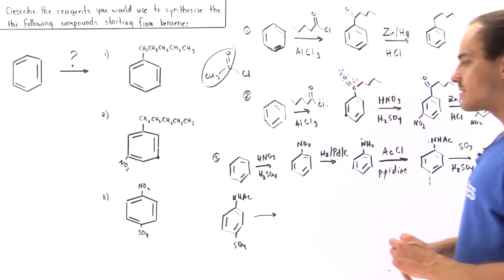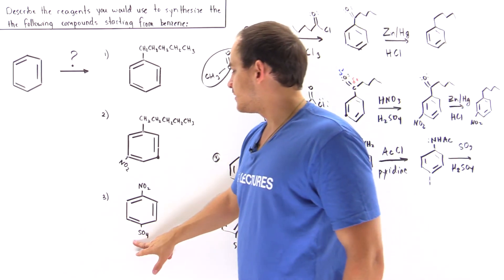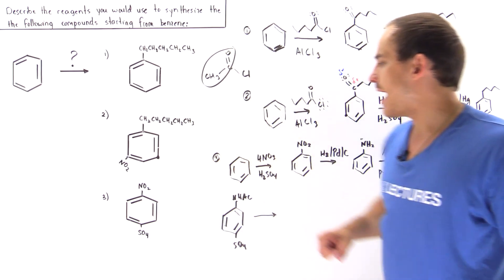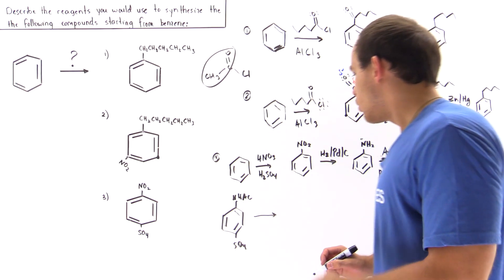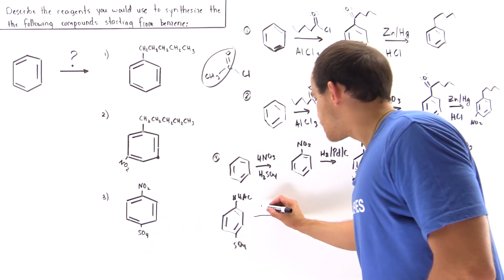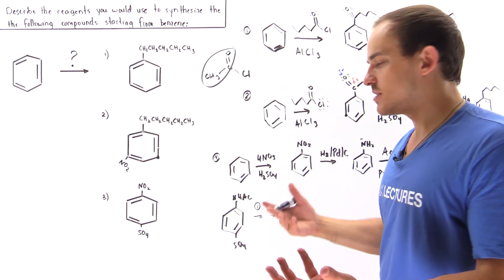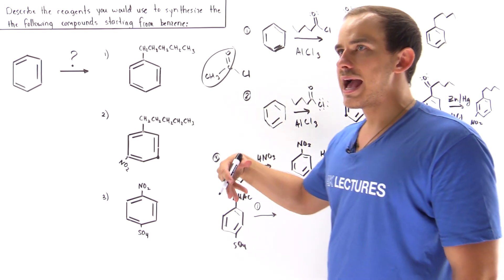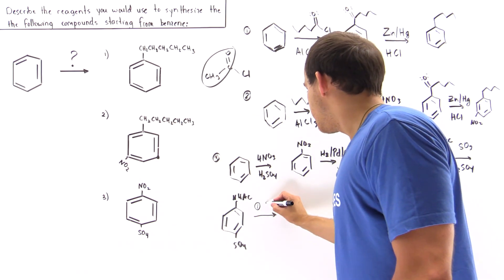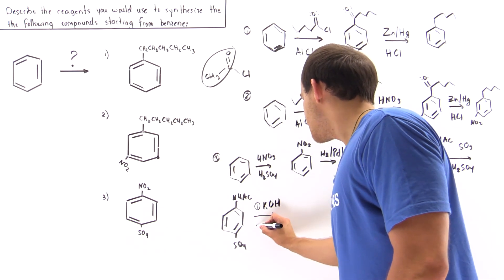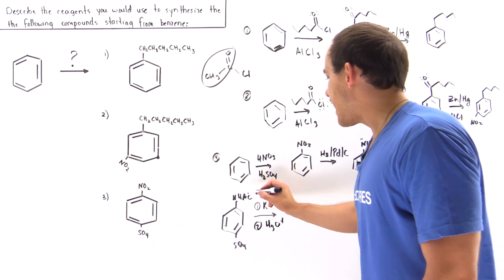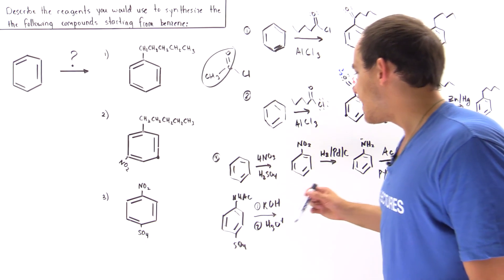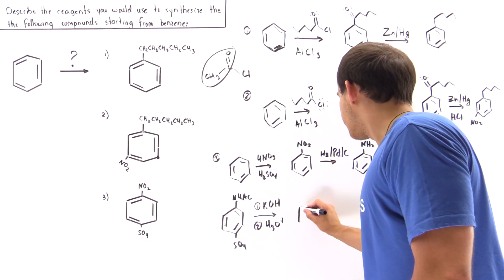After separating to obtain only the para product, we must convert the acetamide group back into the nitro group. We can do this in two steps: first, we use a base such as KOH, and in the second step we use acid (hydronium, H3O+). This removes the acetate group and regenerates the free amine (NH2).